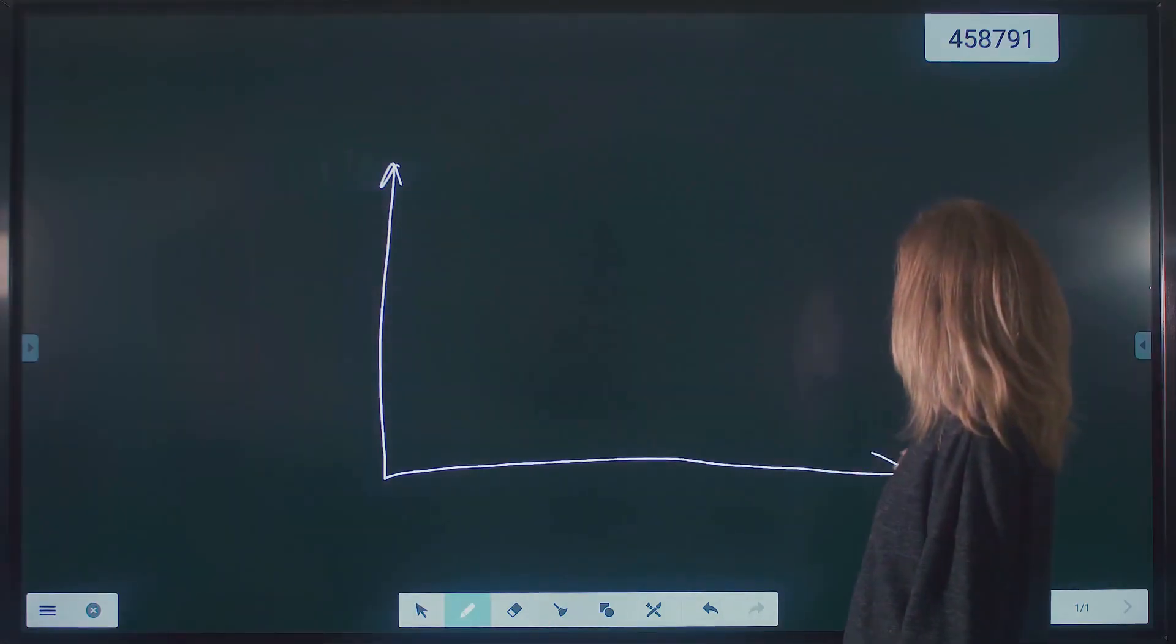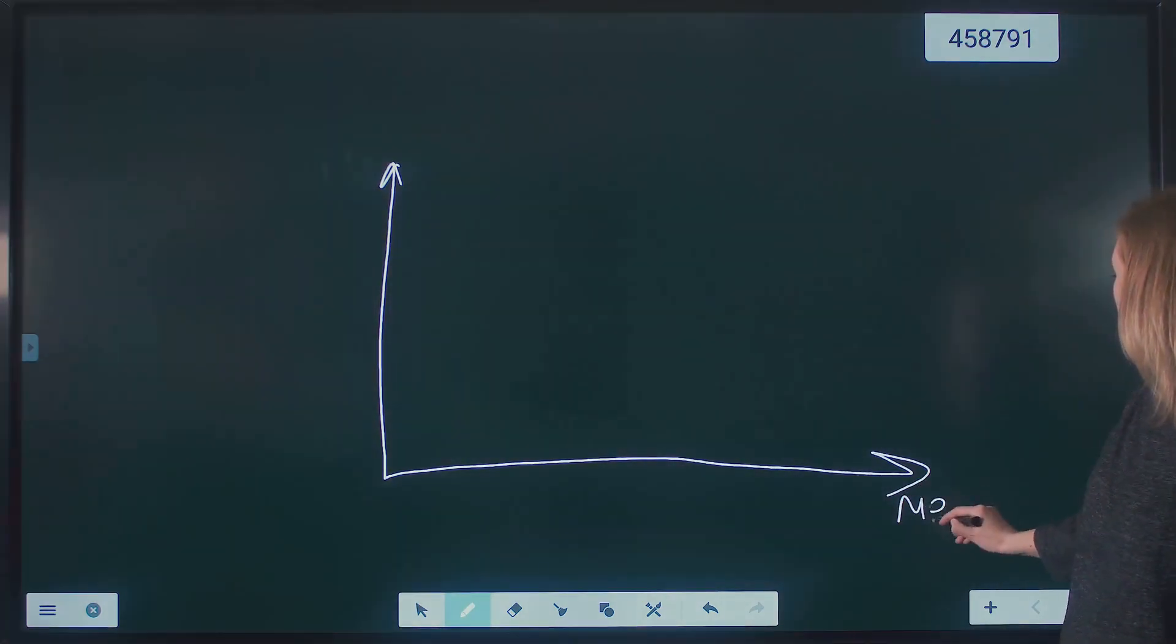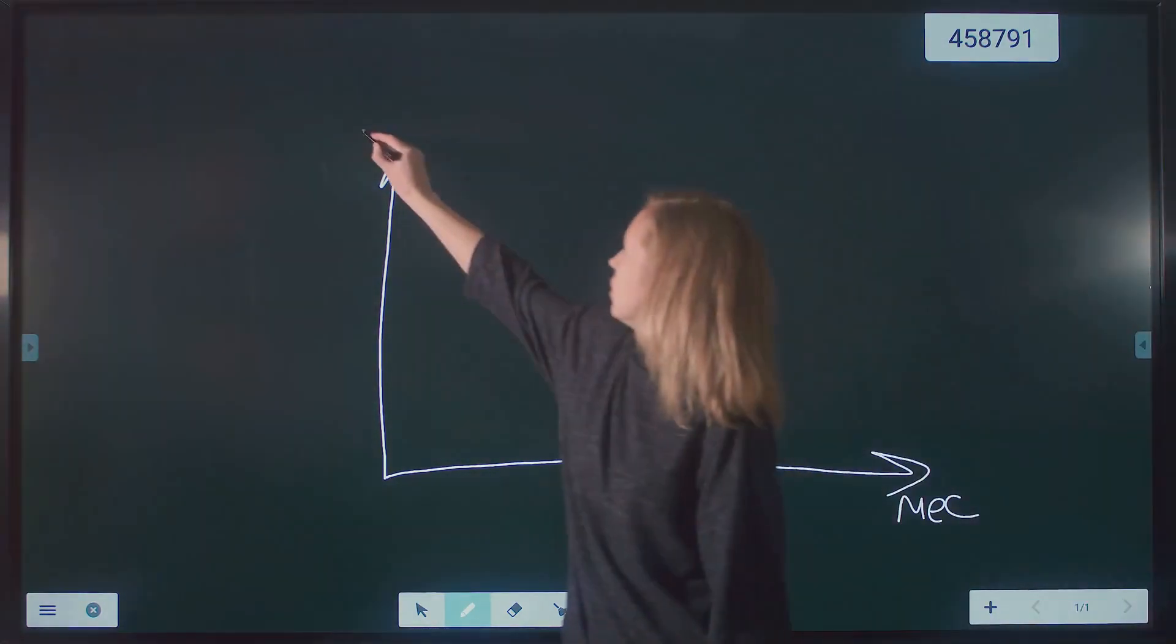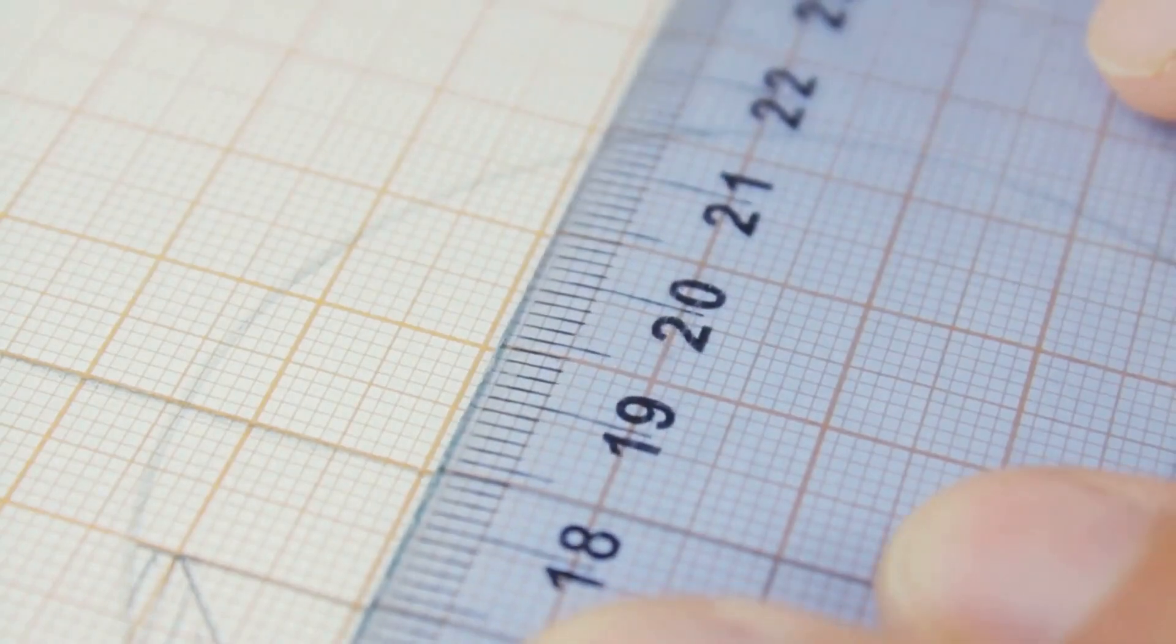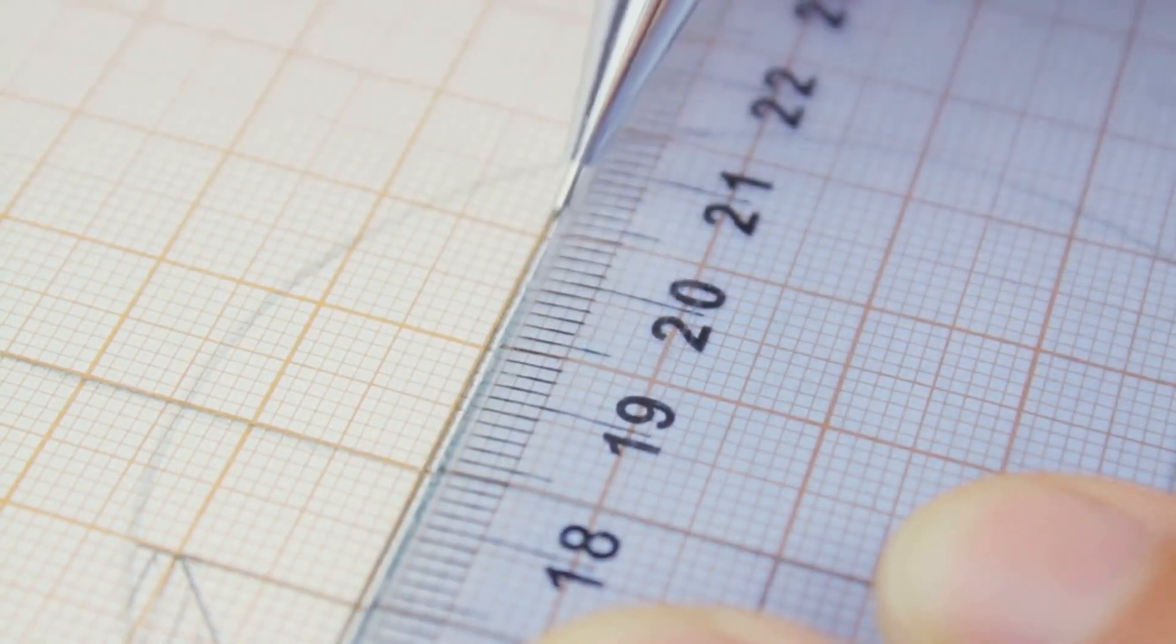We start with a simple linear equation y equals a times x plus b, where a is the slope, b is the y-intercept, x is the independent variable, and y is the dependent variable. This equation represents a straight line in a two-dimensional space.